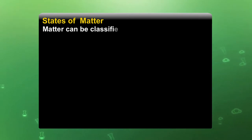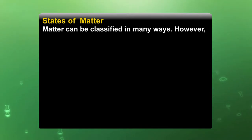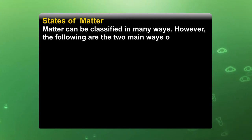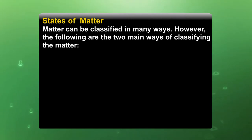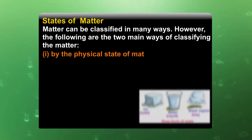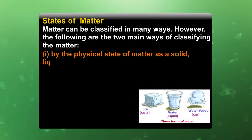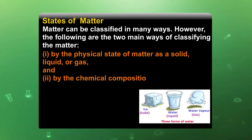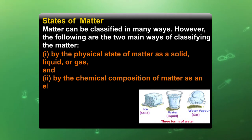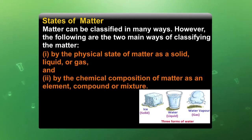Now let us understand the states of matter. As we all know, matter has three states: solid, liquid, and gas. Matter can be classified in many ways. The two main ways are: first, by the physical state — solid, liquid, and gas; and second, by the chemical composition — as an element, compound, or mixture.